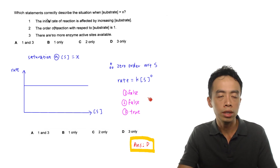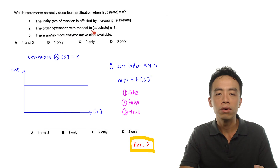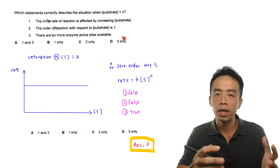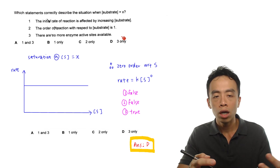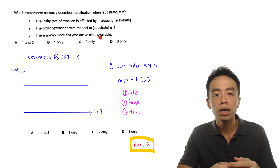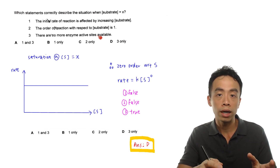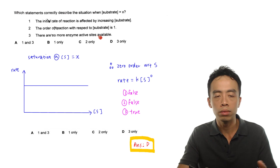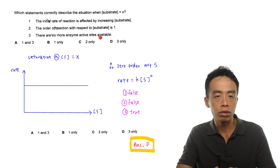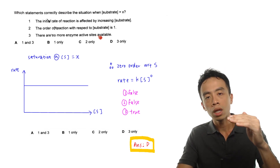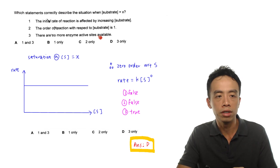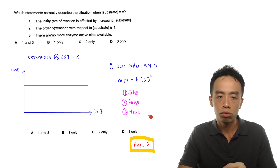Statement three: there are no more enzyme active sites available. This is valid. When saturation occurs, all the enzymes are fully utilized — all the active sites which allow substrate to be converted to products are being utilized. There are no more slots or active sites available for further catalysis. Therefore the rate of reaction is kept at a maximum point and doesn't increase any further. Statement three is true.